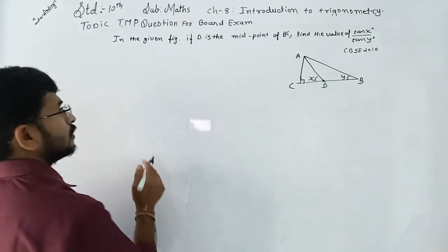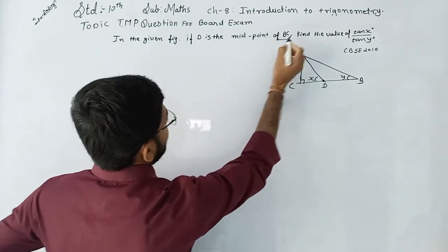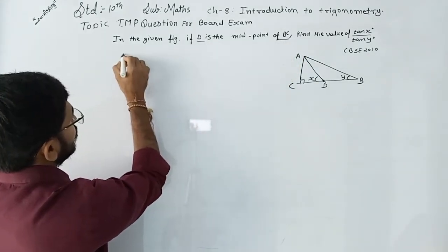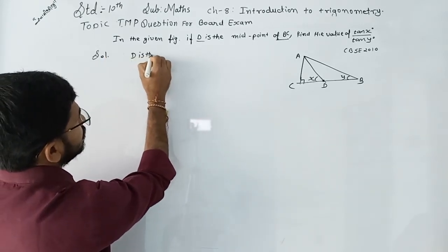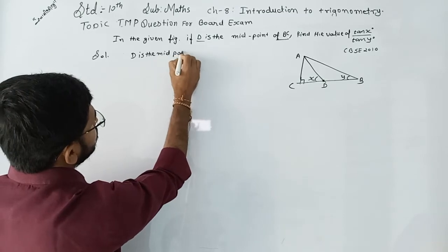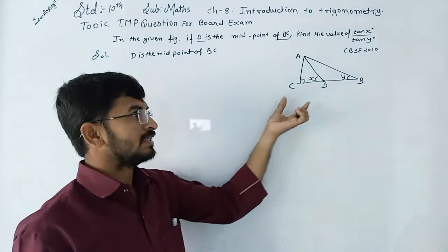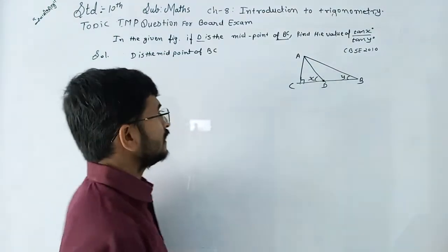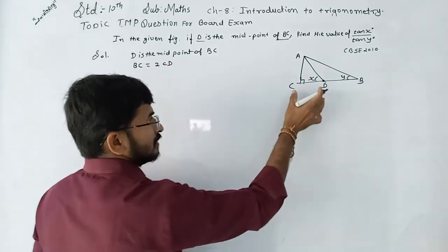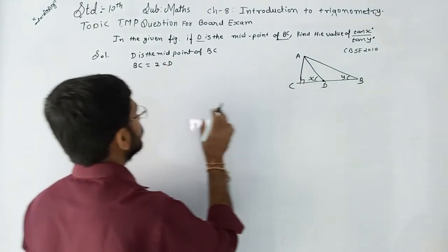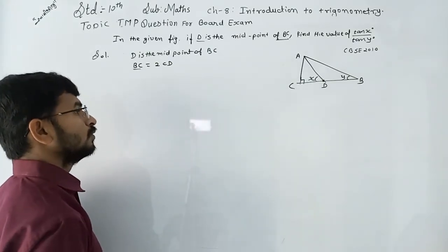First of all, we are given that D is the midpoint of BC, so BC is equal to 2CD. CD is equal to BD, which is equal to one-half of BC. So we write BC is equal to 2CD.